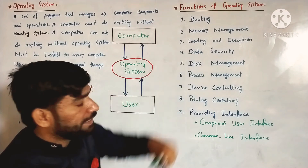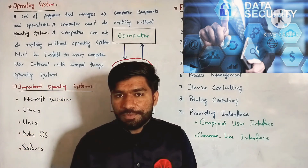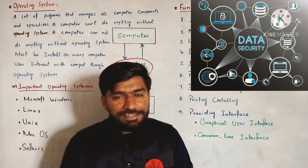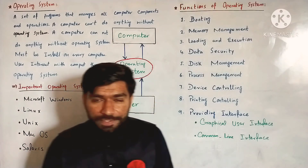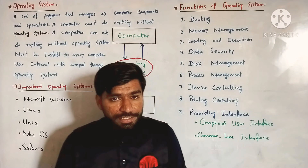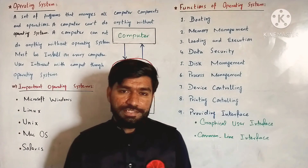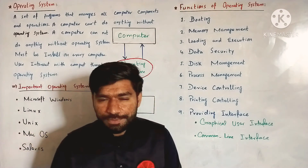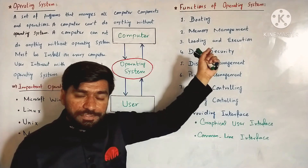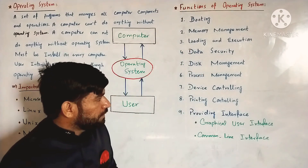The fourth function of the operating system is data security. Security means you can secure your data. The operating system ensures that data on the computer is secure by using different passwords or user IDs to protect data from illegal access.